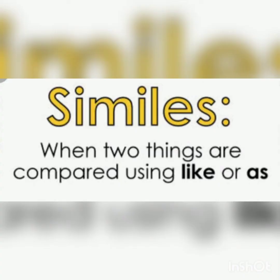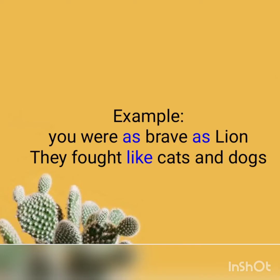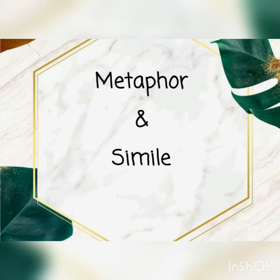A simile is when two things are compared using 'like' or 'as'. For example, 'you were as brave as a lion' — a person is being compared with a brave lion using the word 'as'. Another example: 'they fought like cats and dogs' — someone is being compared with cats and dogs using the word 'like'. The key difference between metaphor and simile is that a simile uses the words 'like' or 'as' to make the comparison.